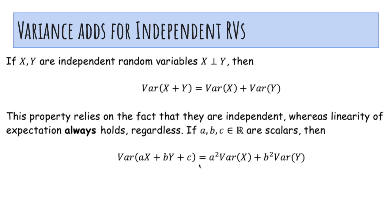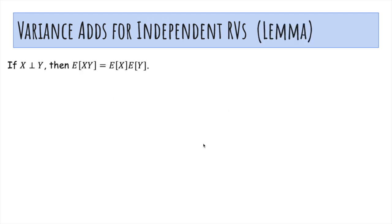And here's another property of variance that you can combine. You could derive this yourself using this property and the variance of aX plus b property.